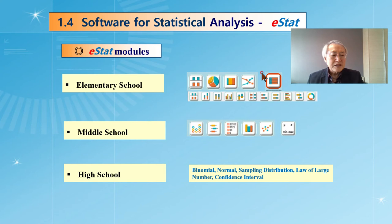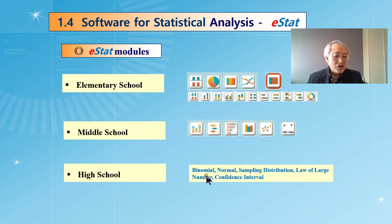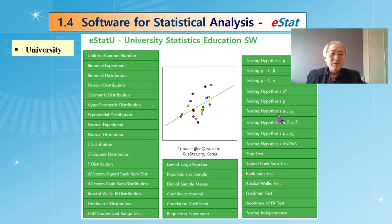Data can be divided into two categories: qualitative and quantitative. Some graphs are for qualitative data, and others are for quantitative data — more specifically for continuous data. For high school students, we found that they are taught binomial distribution, normal distribution, sampling distribution, law of large numbers, and confidence intervals. There is a special module for those topics.